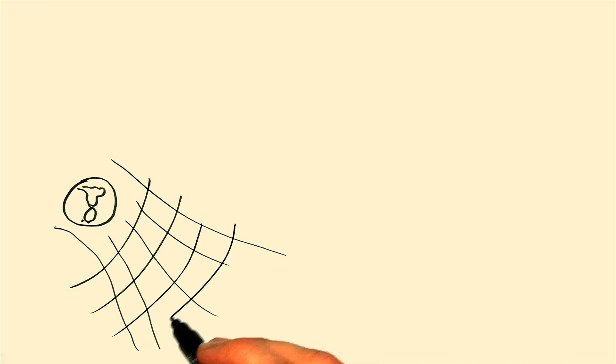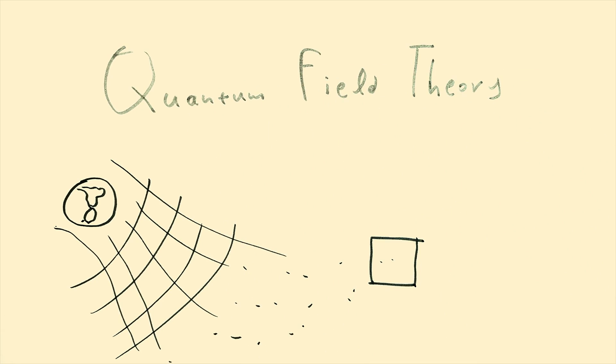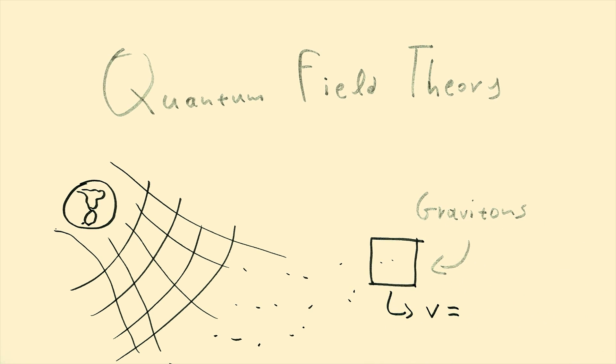There are some particles which are waiting to be found, and in quantum field theory, they are the ones which carry the force of gravity. We call them gravitons, and just like photons, they move at the speed of light.